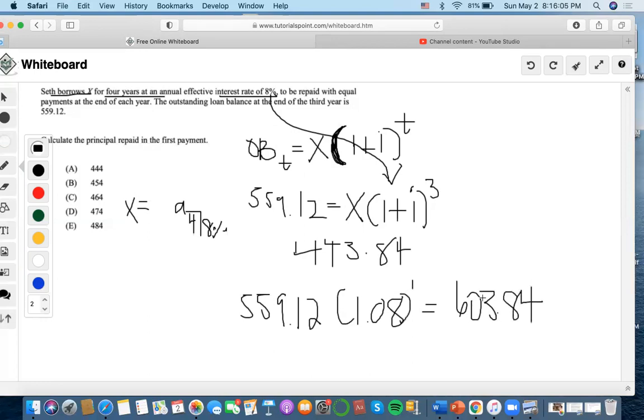Once we do that, we use that as the principal repaid to input into this equation. Using our TVM calculator, we say that $603.84 is the payment, four is the number of years, 8 is the interest rate, zero is the future value, and compute present value, which is $2,000.